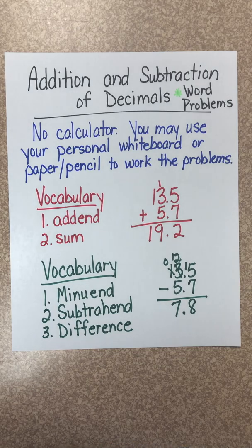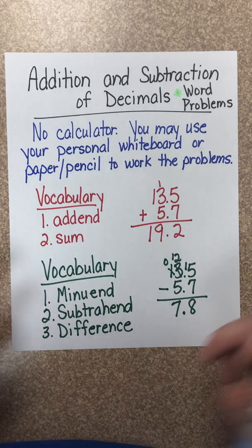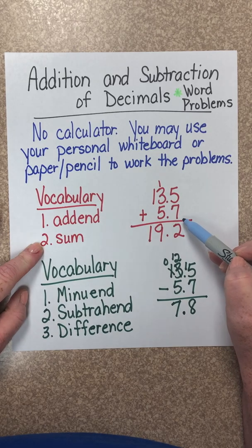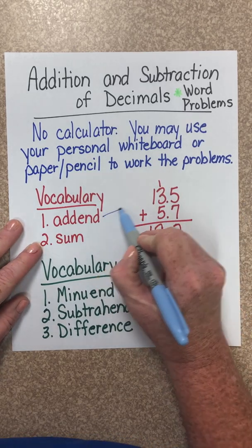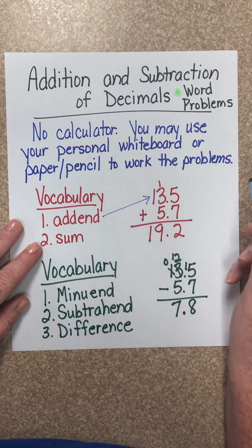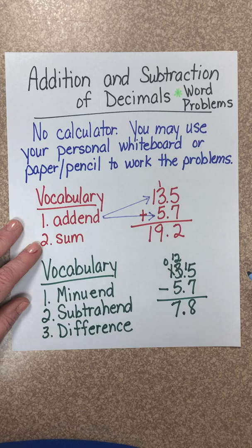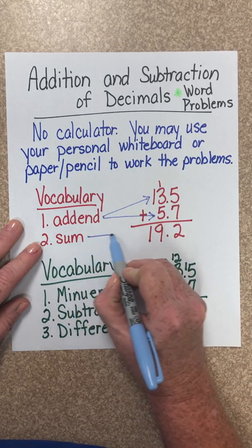Let's look at our vocabulary. We have the word addend and sum when we add decimals. The numbers that we add together are called addends. The answer to addition is sum.